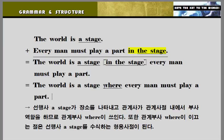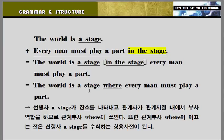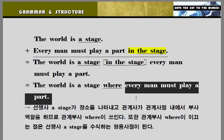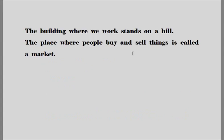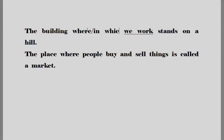다시 한번 정리해 볼까요. 관계부사 where입니다. stage는 선행사가 되고요. 관계부사절은 부사절이 아니라 stage를 수식해주는 형용사절이라는 것 조심하시기 바랍니다. 관계부사에서 가장 중요한 것 — 선행사가 관계사절 내에서 무슨 역할을 하는가. 장소를 나타내는 장소부사 역할을 할 때 관계부사 where를 쓰게 됩니다. 예문: 'The building will be what stands on you' — 빌딩이라고 하는 선행사가 관계사절 내에서 장소 개념의 부사 역할을 하게 되는 거죠. 그래서 where가 쓰인 겁니다. in which로도 대신해서 쓸 수 있겠죠.